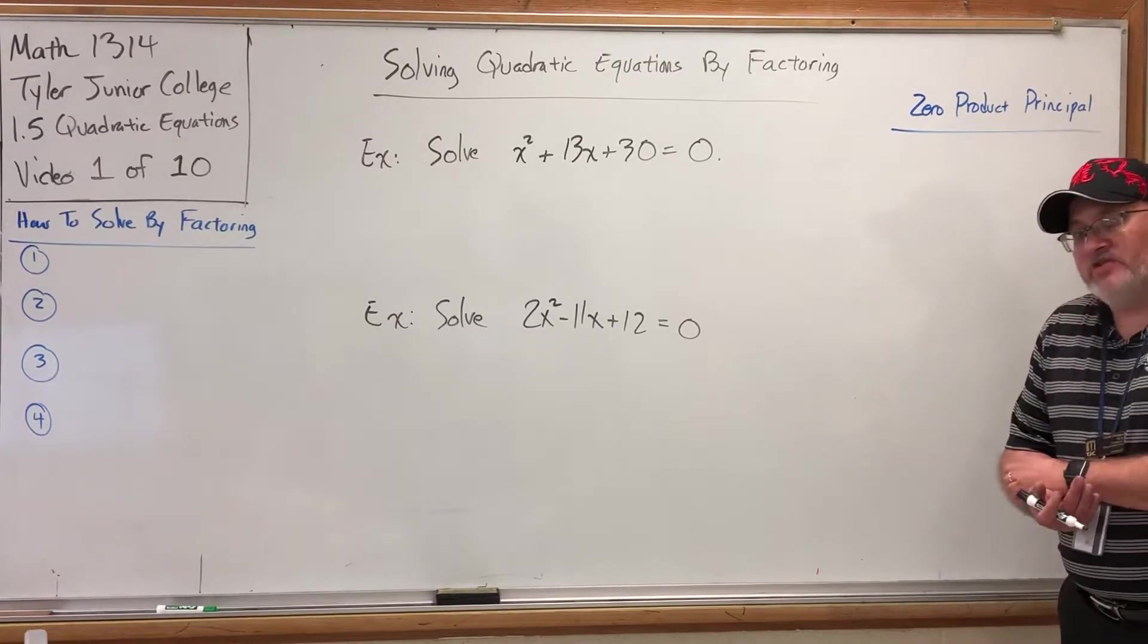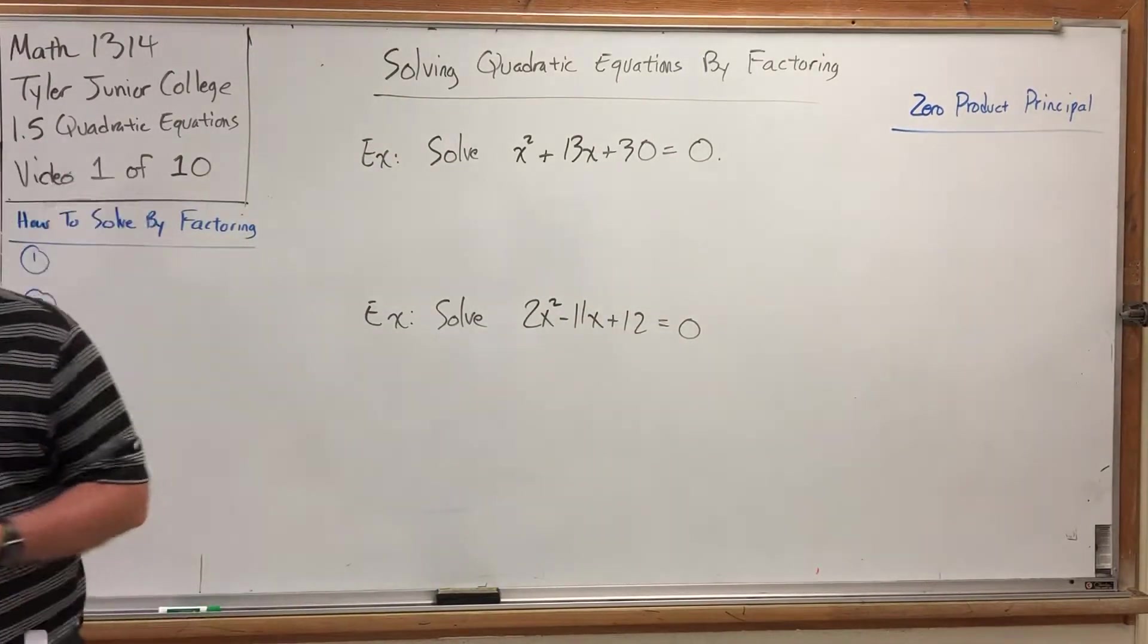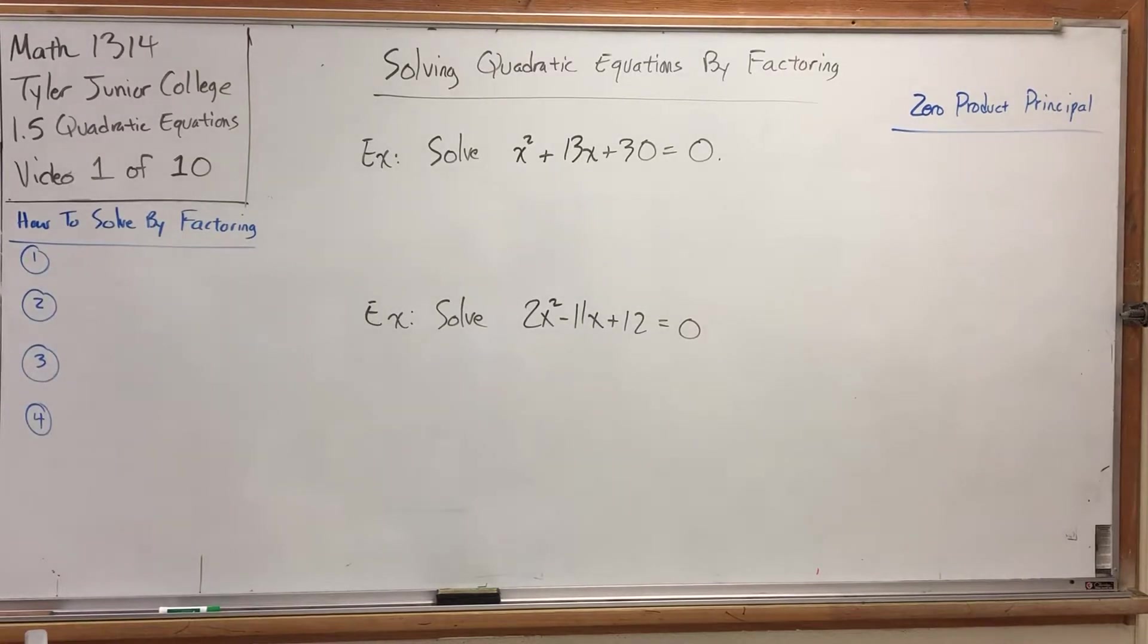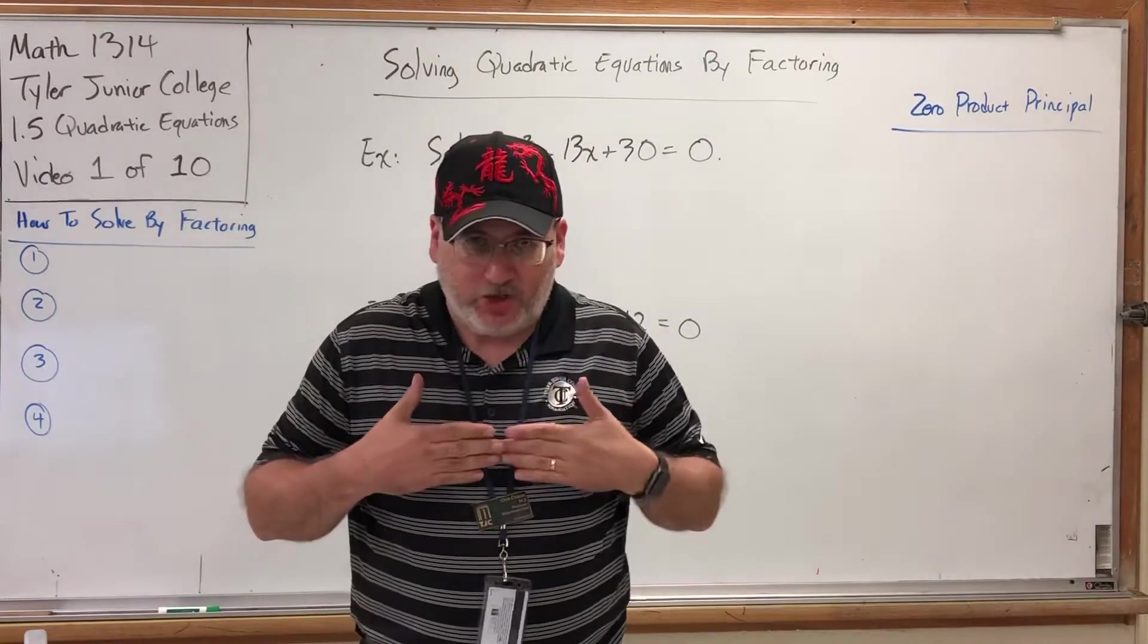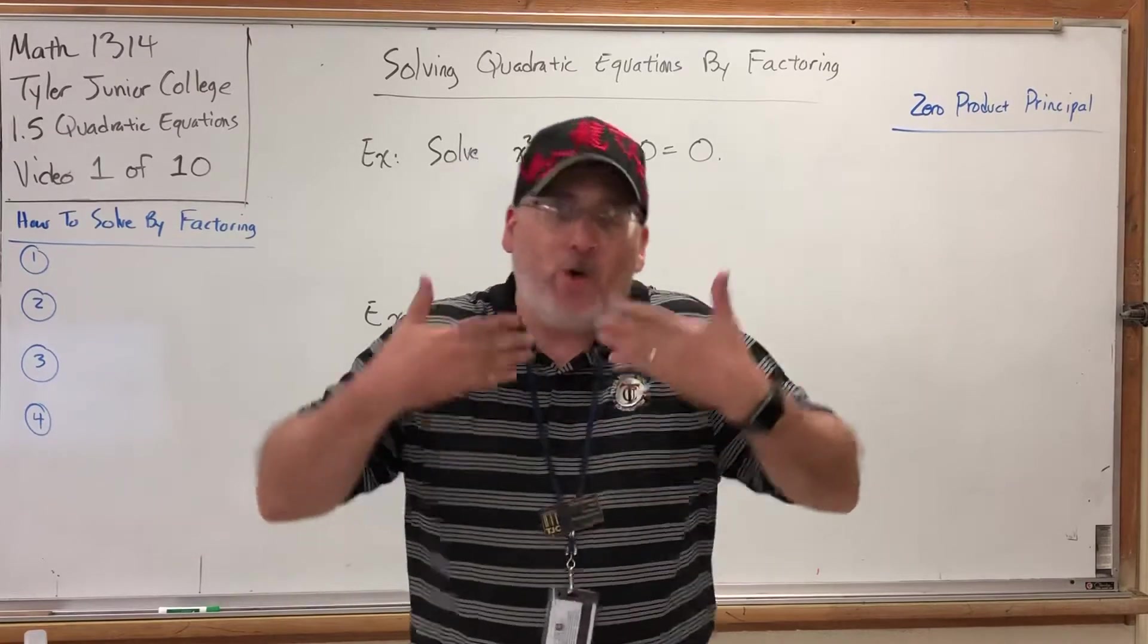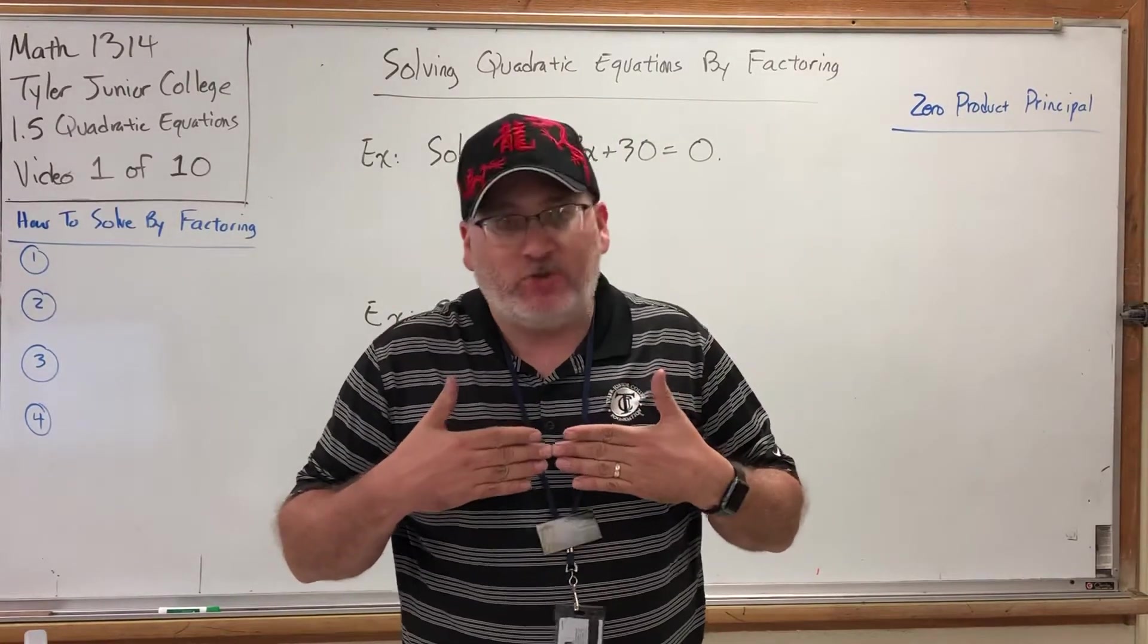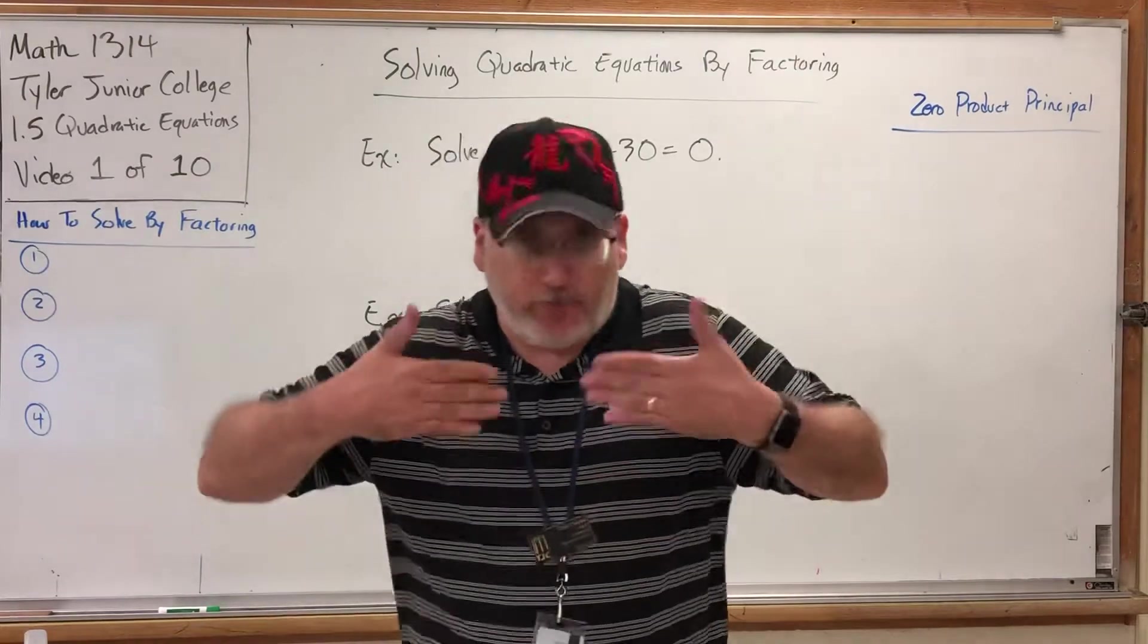So how do we solve an equation by factoring? Well, we have to take advantage of something called the zero product principle. And to illustrate the zero product principle, I'm going to write a couple of numbers on my hands. I'm going to step over here so you can't see what they are. Let's see. Let's do this number and let's do this number. Okay. Now, I'm not going to tell you the two numbers I wrote on my hand. Okay? I'll show them to you in a minute. But I'll tell you something about them and I want to see if you can guess what the numbers are. The two numbers on my hand, when I multiply them, I get six. So, what numbers could be on my hand? Two times three? They could, except neither one is two nor three.